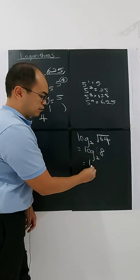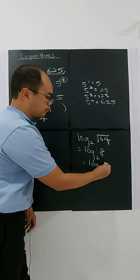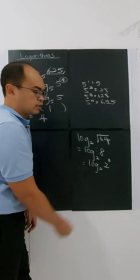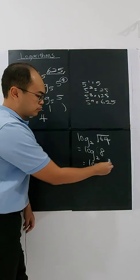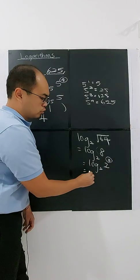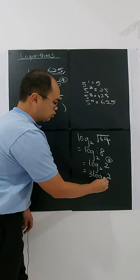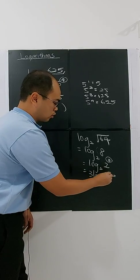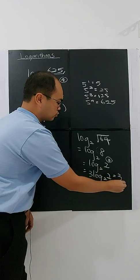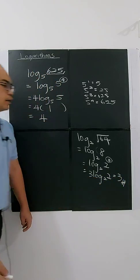And 8 can convert to base 2 with index 3, base 2 with index power of 3. You can bring the 3 in front and you have log 2 base 2. Log 2 base 2 is 1, so you have 3.